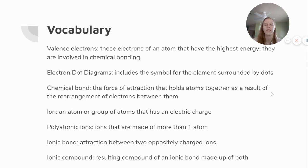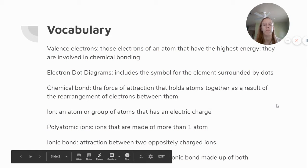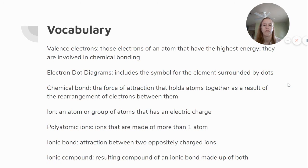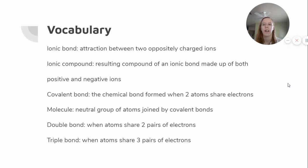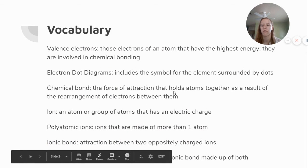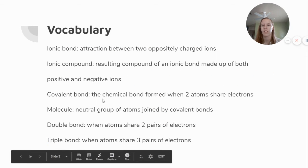Polyatomic ions are ions that are made of more than one atom. An ionic bond is the attraction between two oppositely charged ions. An ionic compound is the resulting compound of an ionic bond made up of both positive and negative ions.